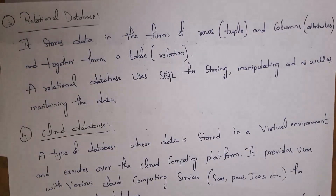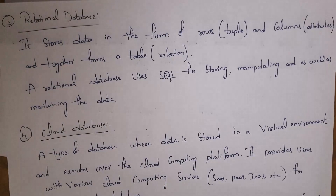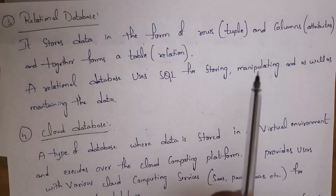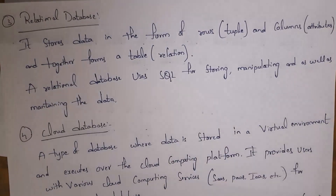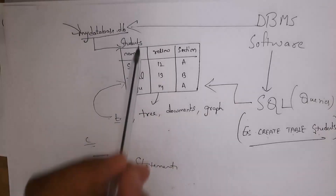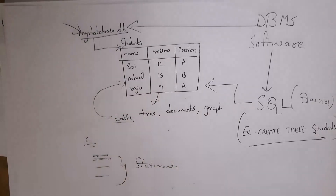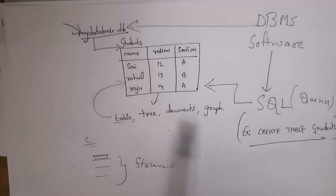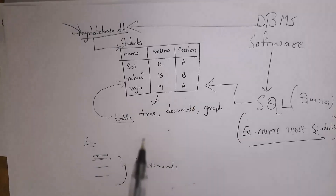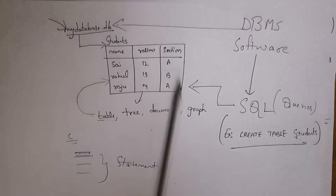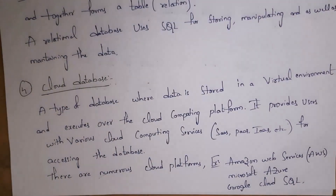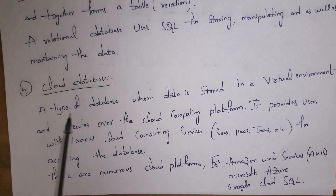Data stored in the form of rows and columns to form a table is known as a relational database. A relational database uses Structured Query Language for storing, manipulating, and maintaining the data. In a relational database, data is stored in the form of tables — rows and columns — and we use SQL in relational databases.